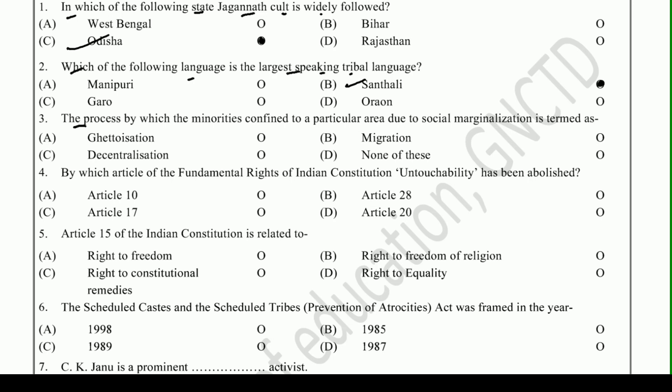The process by which the minority is confined to a particular area due to social marginalization is termed as — when minorities are forced to live only in a particular area, what do we call it? Options: Ghettoization, Migration, Decentralization, or None of these. The right answer is Ghettoization.